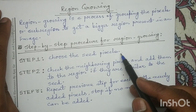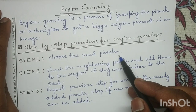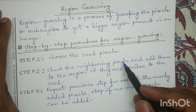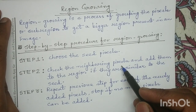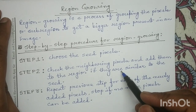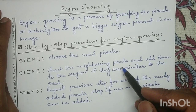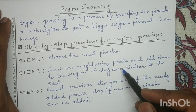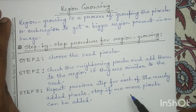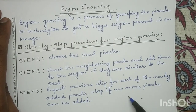In step 1, we have to identify the seed pixels. Then in the neighborhood pixels we have to identify whether they are similar or not. If the neighboring pixels are similar, we will grow the region; else we do not grow the region. This process we have to repeat until we finish our region growing.